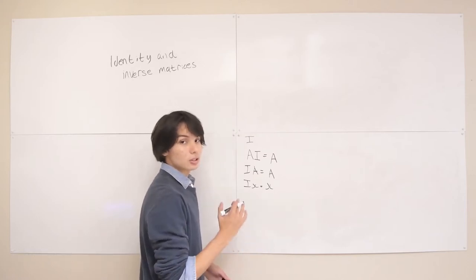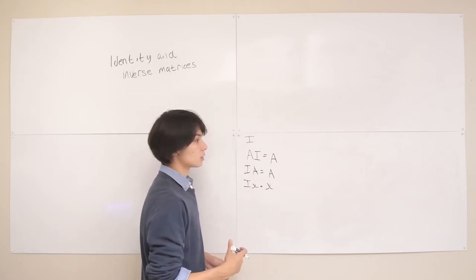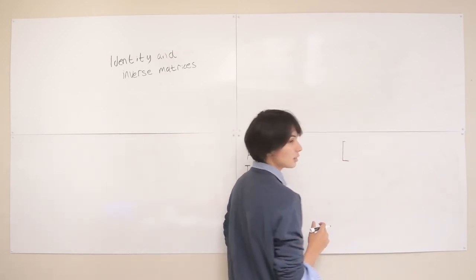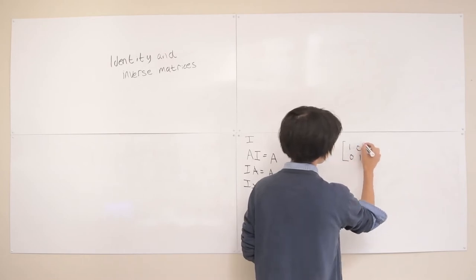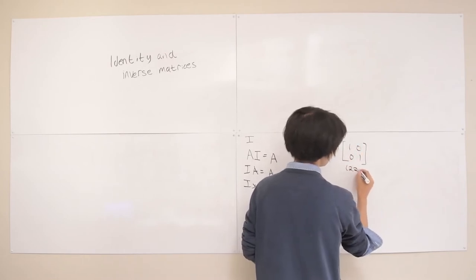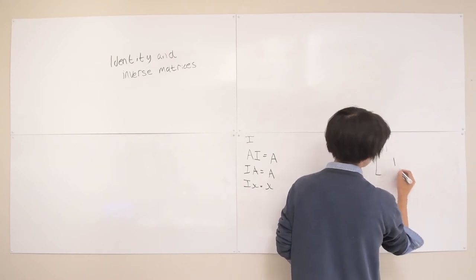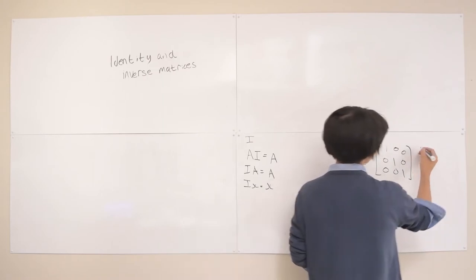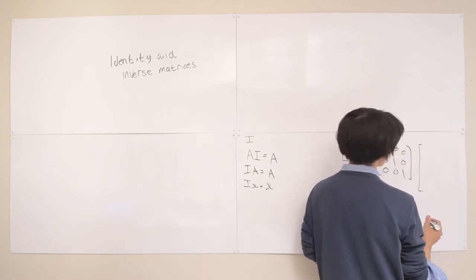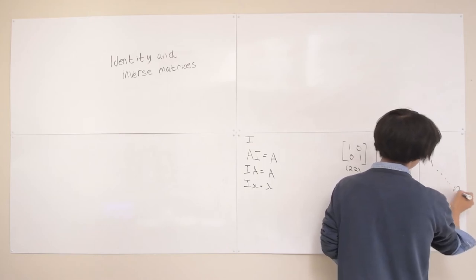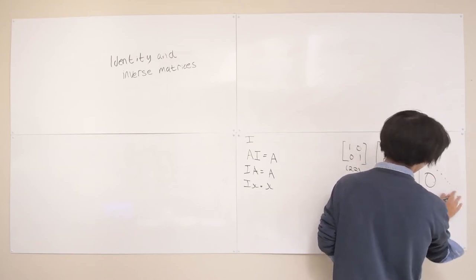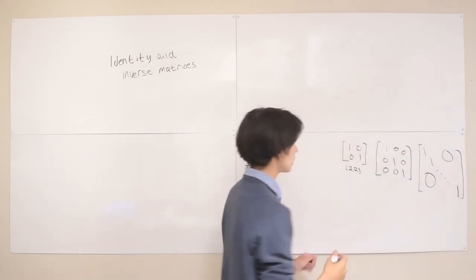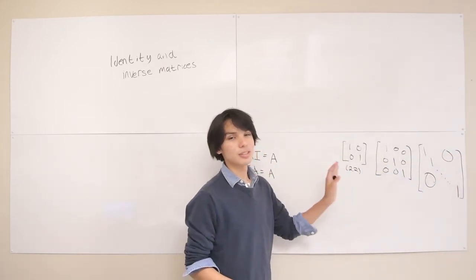So what does the identity matrix actually look like, and let's just test it out once just to see that this is true. Well, identity matrices look like this. So this is the 2x2 identity matrix, this is the 3x3 identity matrix, and generally if we have some n-dimensional identity matrix, we have 1s all across the diagonal and 0s everywhere else. And notice that identity matrices are always square.